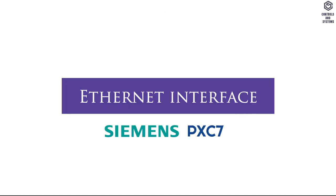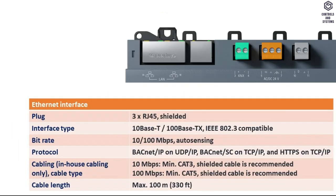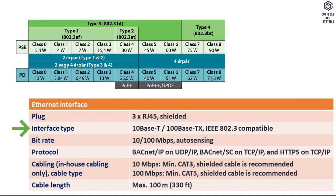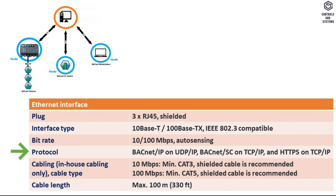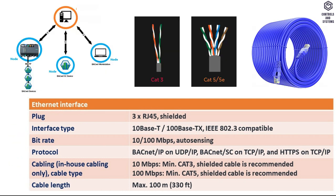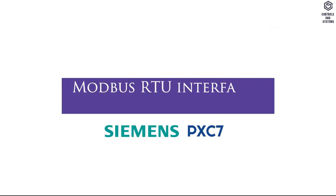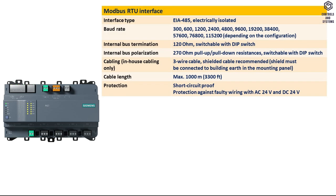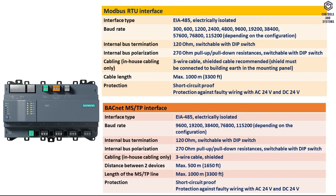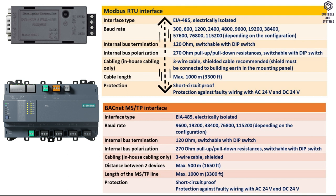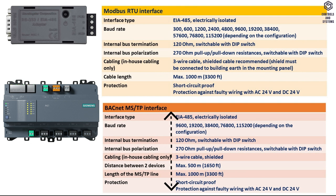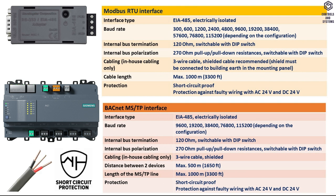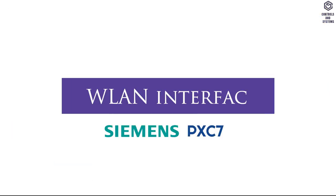Ethernet Interface table indicates specifications and ranges of Plug Type, Interface Type, Bit Rate, Protocol, Cable Type, and Cable Length. Modbus RTU Interface and BACnet MS/TP Interface table indicates Interface Type, Baud Rate, Internal Bus Termination, Internal Bus Polarization, Cable Length, and Protection.